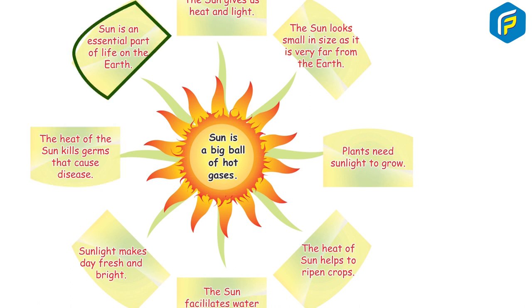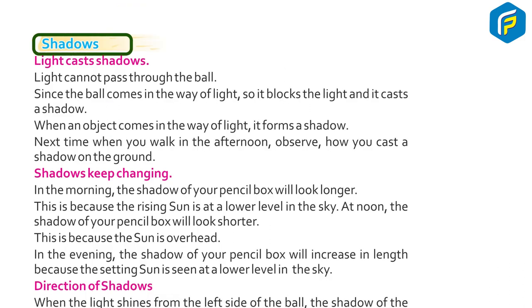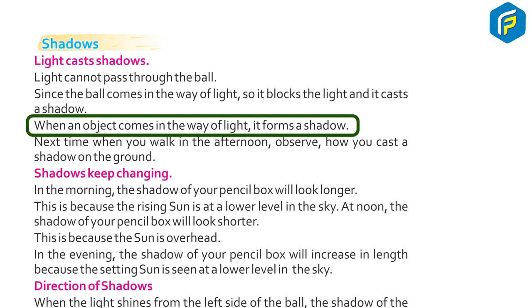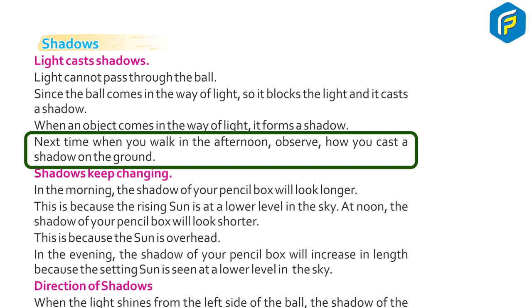Shadow. Light casts shadow. Light cannot pass through the ball since the ball comes in the way of light, so it blocks the light and casts a shadow. When an object comes in the way of light, it forms a shadow. Next time when you walk in the afternoon, observe how you cast the shadow on the ground.